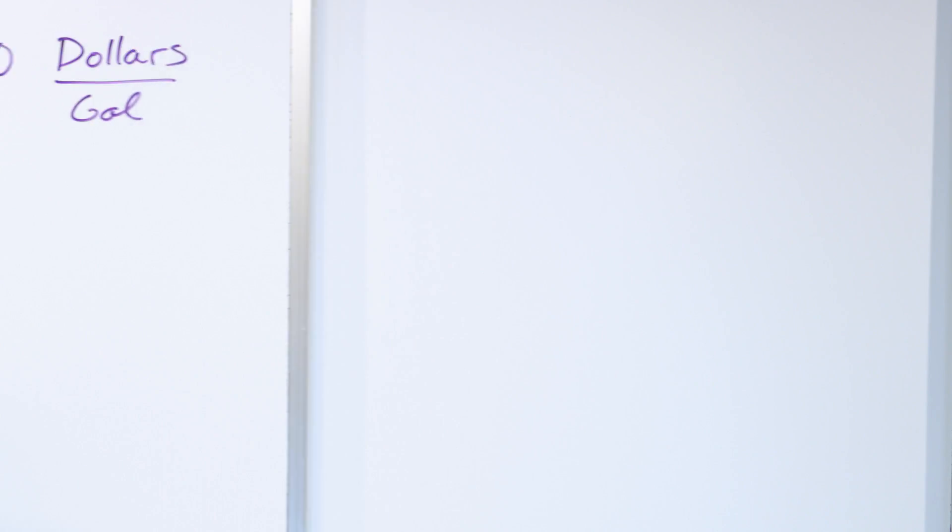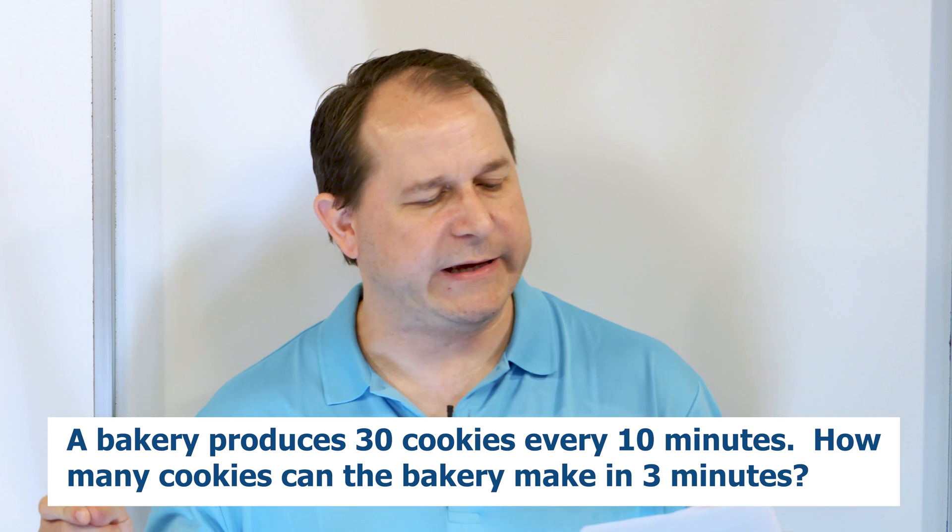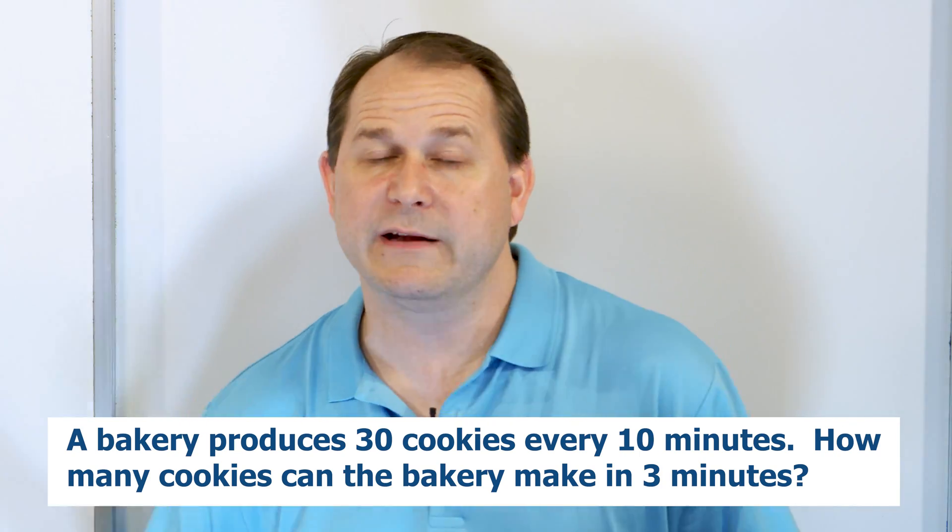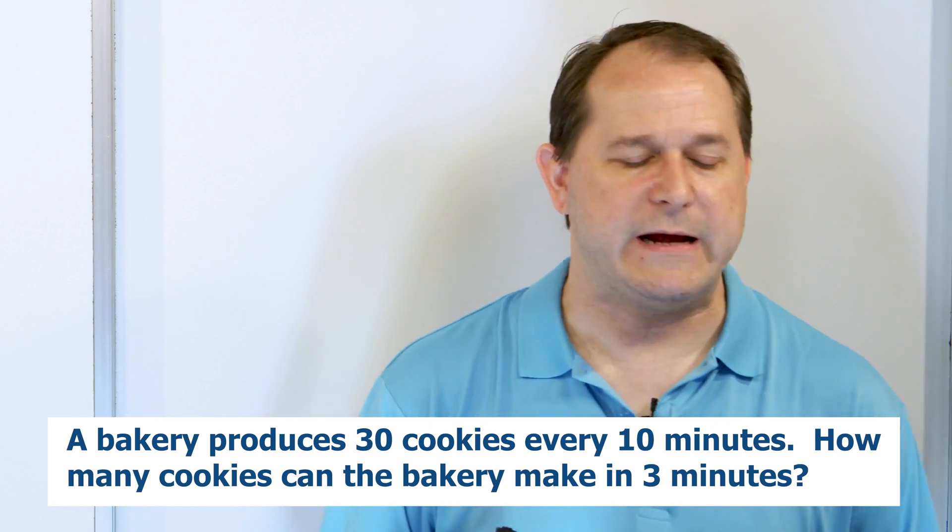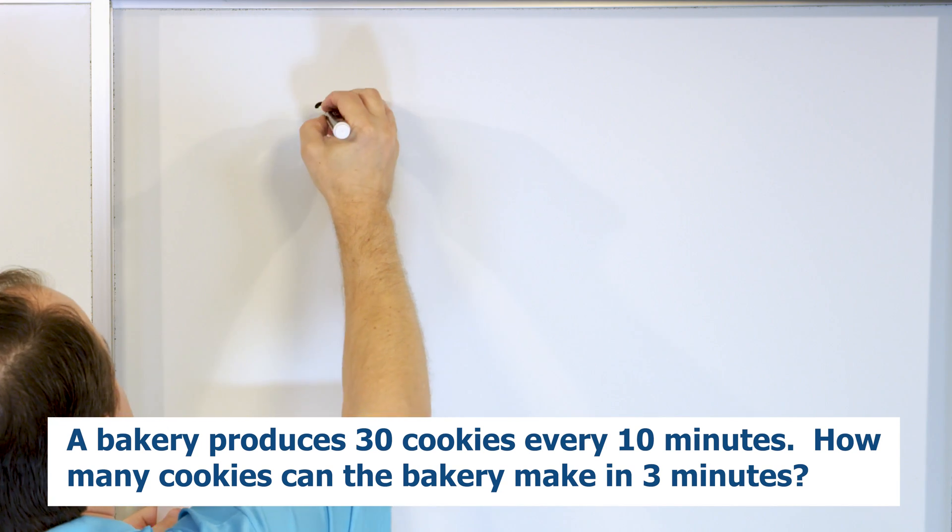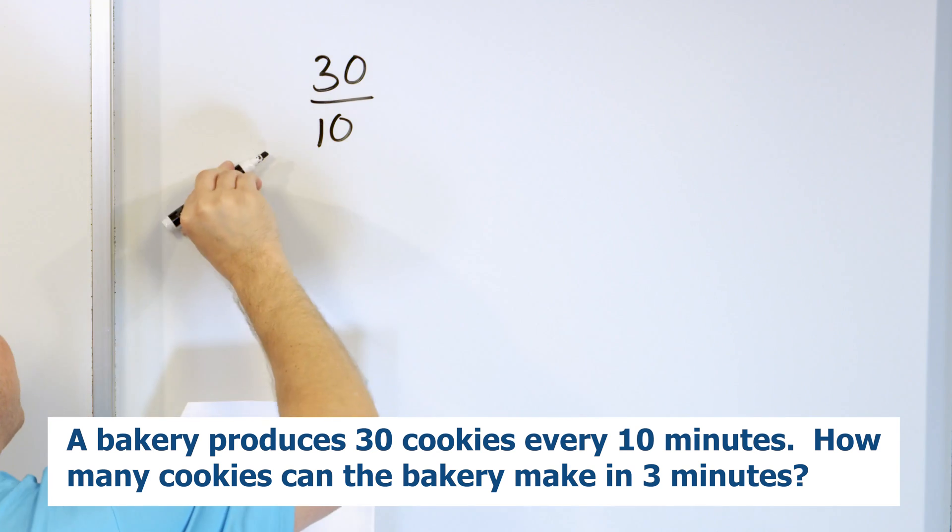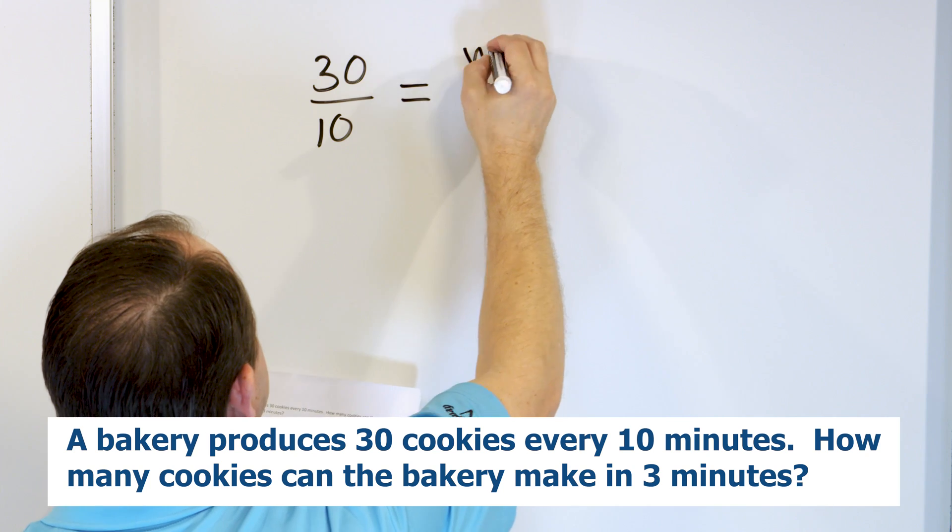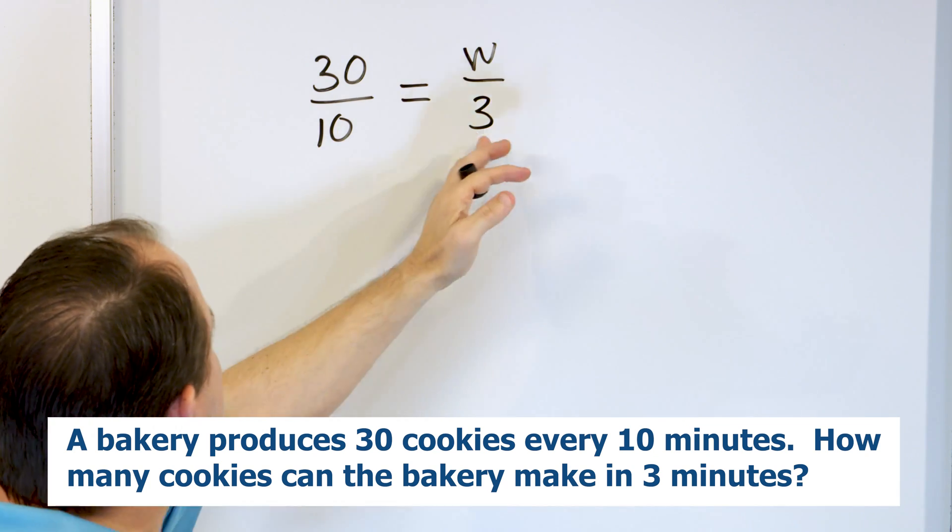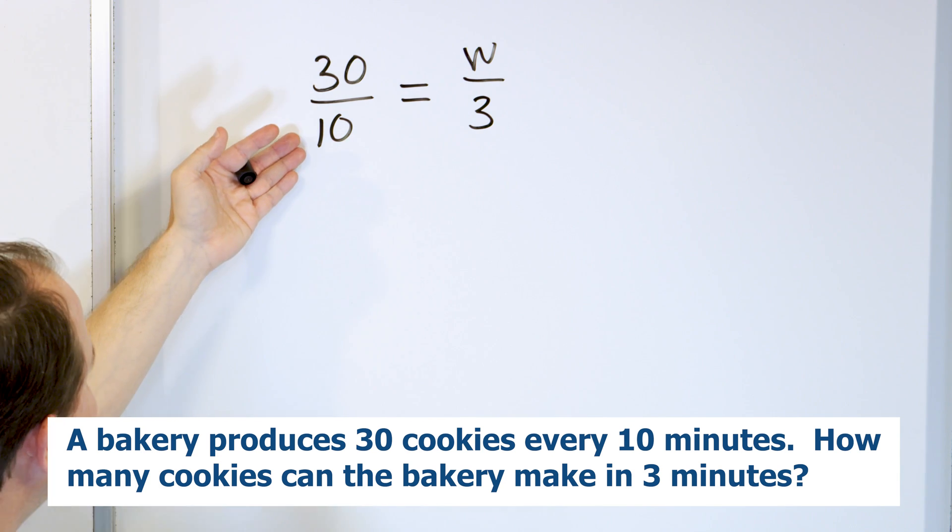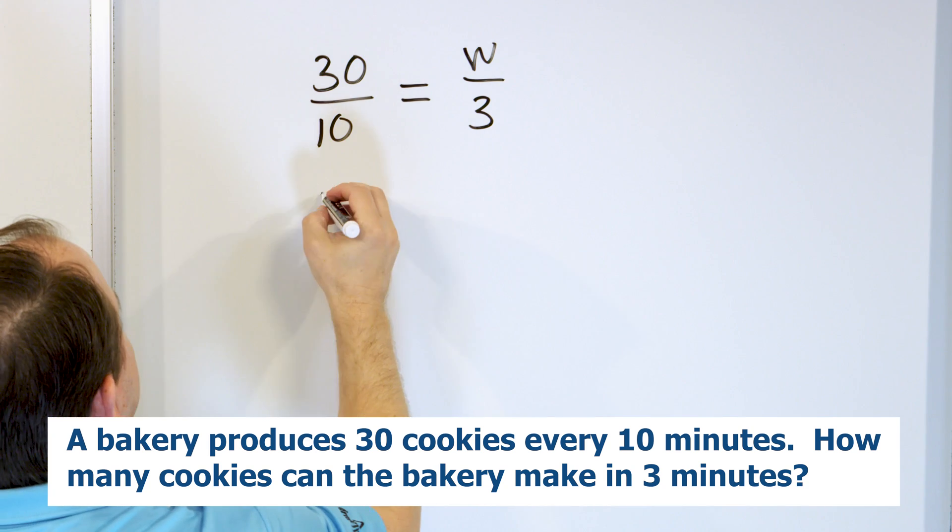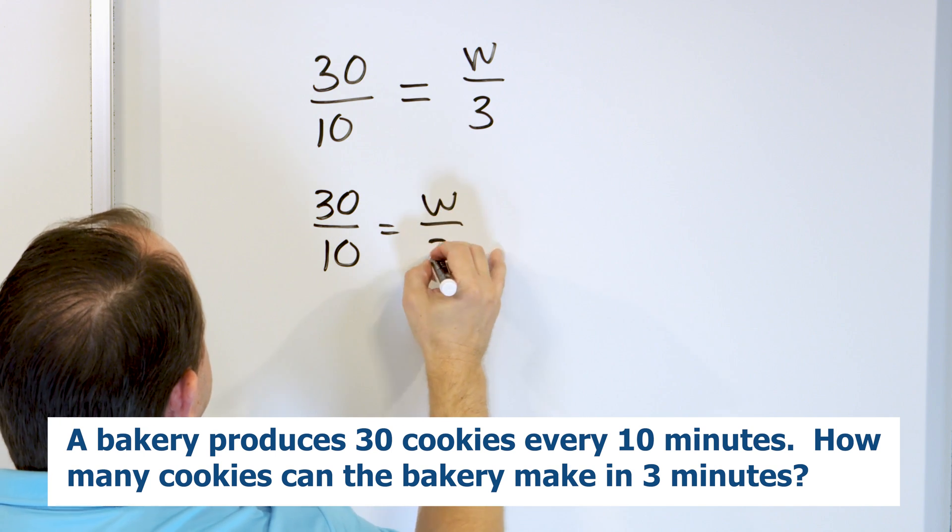All right. Let's move along to problem number three. It says a bakery produces 30 cookies every 10 minutes. How many cookies can the bakery produce in three minutes? So I'm producing 30 cookies every 10 minutes. So 10 minutes go by, 30 cookies. 10 more minutes go by, 30 more cookies, and so on. How many cookies can I produce in three minutes? This is a ratio problem because the 30 cookies here in every 10 minutes, this forms a ratio of cookies made for every 10 minutes. And we're saying that the rate of production of cookies doesn't change, so I can set that equal to however many cookies I think I'm going to produce in three minutes. These rates are the same because nothing has changed with the speed of the cookie production. 30 cookies as it relates to 10 minutes is the same as however many cookies I'm trying to find out over three minutes. So let me calculate what W is.